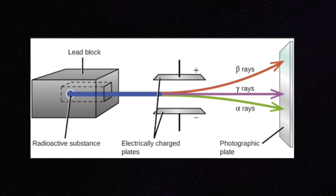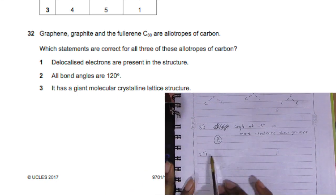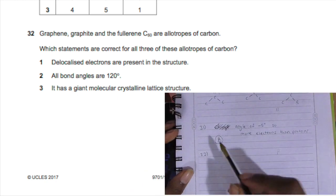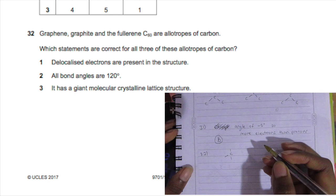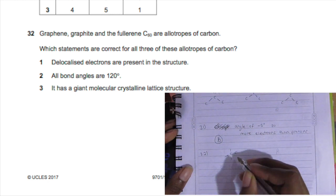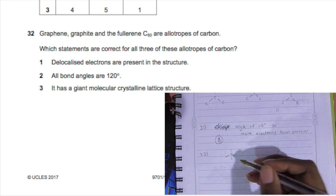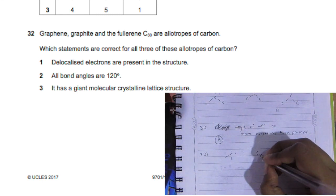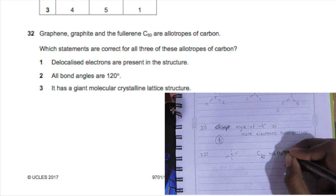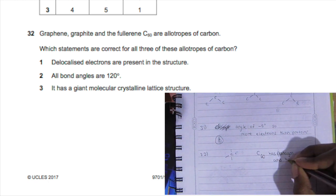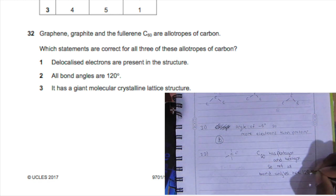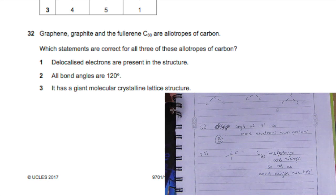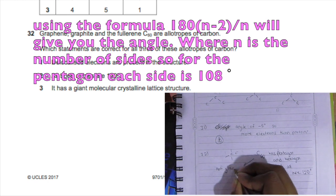Question 32: Graphene, graphite, and the fullerene C60 are all allotropes of carbon. Which statements are correct for all three? All of them have delocalized electrons in their structure because carbon is only bonded to three other carbons, when carbon can have a total of four bonds because one of the electrons in the p orbital is free.